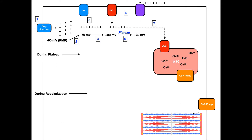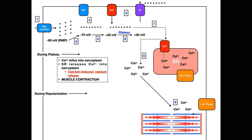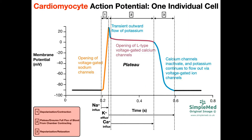Those electrical cells of the heart will trigger the cardiomyocytes to contract, so the cardiomyocytes also have an action potential. That's the second one, and it is different and distinct from the pacemaker potential. In this video, we're going to be talking about the cardiomyocyte, or cardiac action potential.